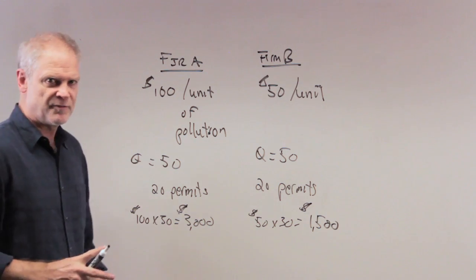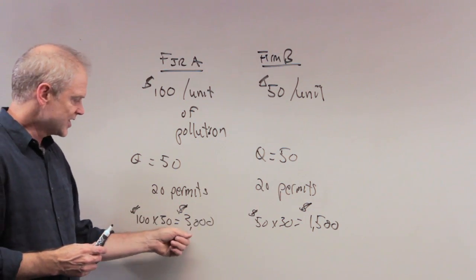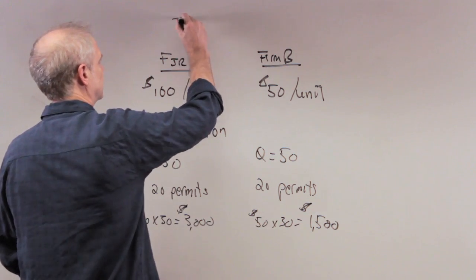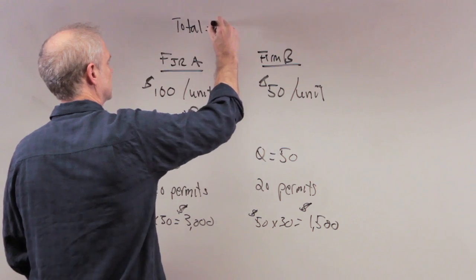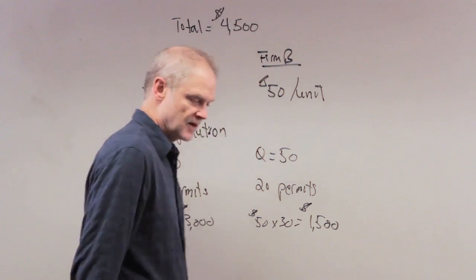So now the total cost of getting rid of pollution if the government does not allow trade of these permits is $3,000 and $1,500, so total is $4,500.